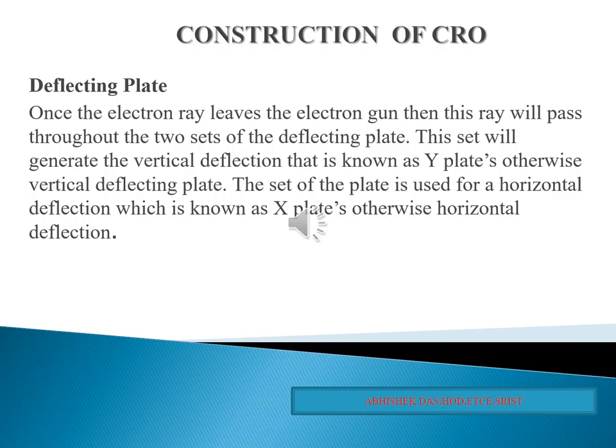The second part of the CRO is the deflection system or deflecting plates. In a general purpose oscilloscope, electrostatic deflection of the electron beam is employed. The deflecting system comprises a pair of horizontal deflection plates and a pair of vertical deflection plates. The electron beam is deflected and the spot is swept on the screen by the voltage applied to the deflection plates.